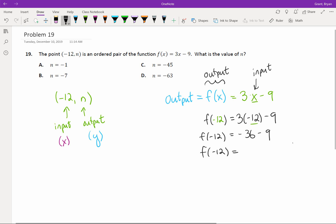And, finishing this off, just following PEMDAS, it looks like we're going to get negative 45. So, this tells us when we input negative 12 into a formula, the output is negative 45.